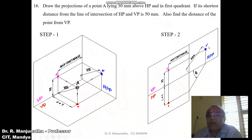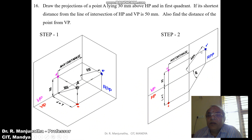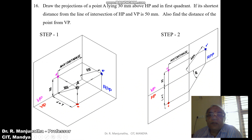Draw a horizontal projector here. We know the shortest distance is 50 mm. By using the compass, measure the distance and cut an arc so that you will get A double dash. Then draw a vertical projector from here to this line so that the distance in front of VP will come here. Draw a line inclined at 45 degrees — the horizontal distance is converted into vertical distance. Draw a horizontal projector and a vertical projector from A dash; both will intersect at small a. Then measure the distance with respect to VP, which is what we need to determine.